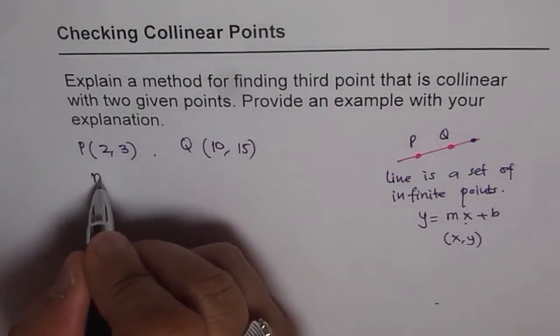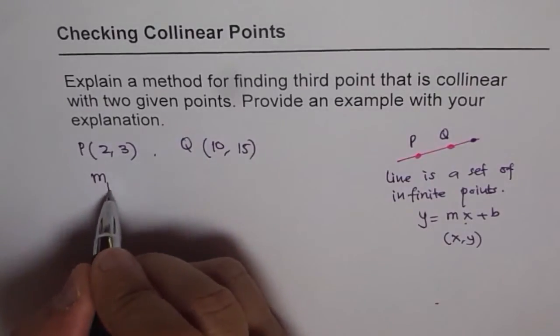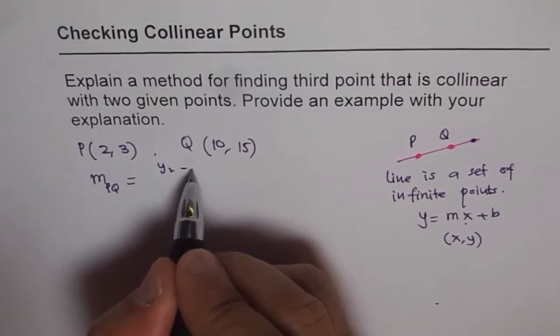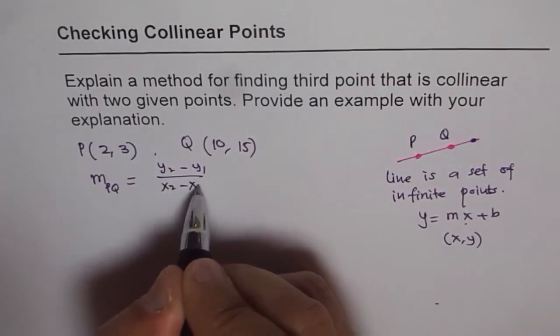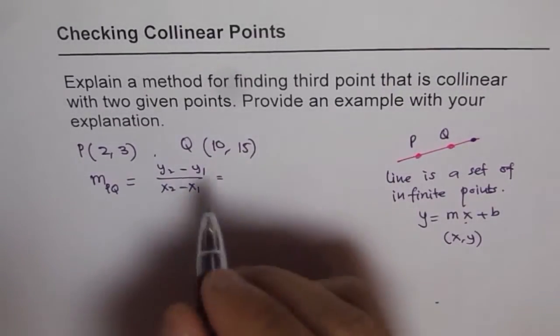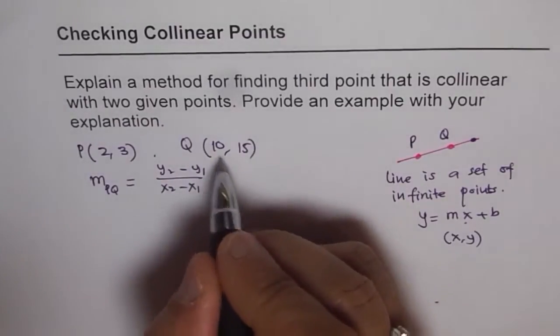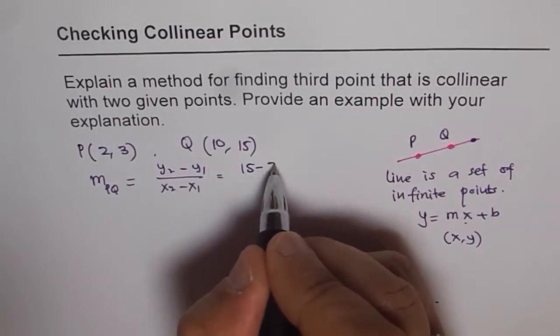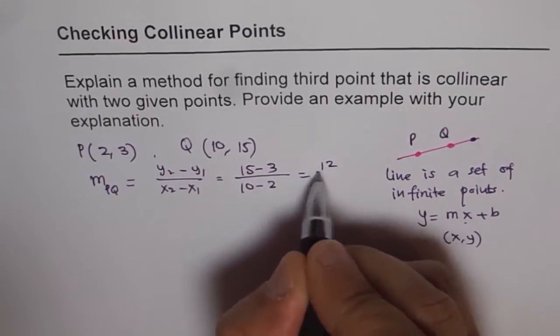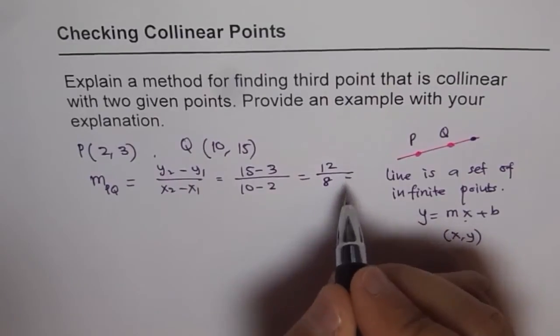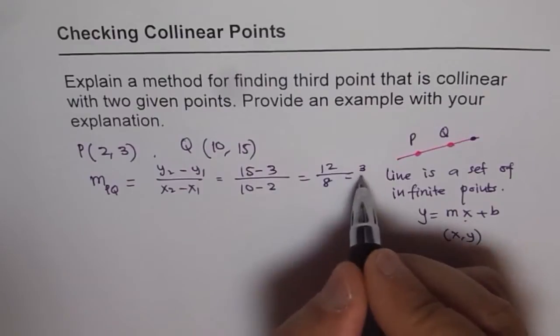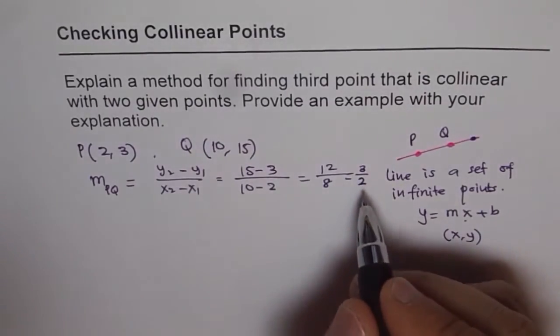The slope of a line going through these two points will be slope M_PQ. So it is Y2 minus Y1 over X2 minus X1. PQ always takes second as the second point, from Q to P. So it is 15 minus 3 over 10 minus 2. 15 minus 3 is 12 and 10 minus 2 is 8. You can simplify this dividing both by 4. So you get 4 times 3 is 12 and 4 times 2 is 8. We get a slope of 3 over 2.